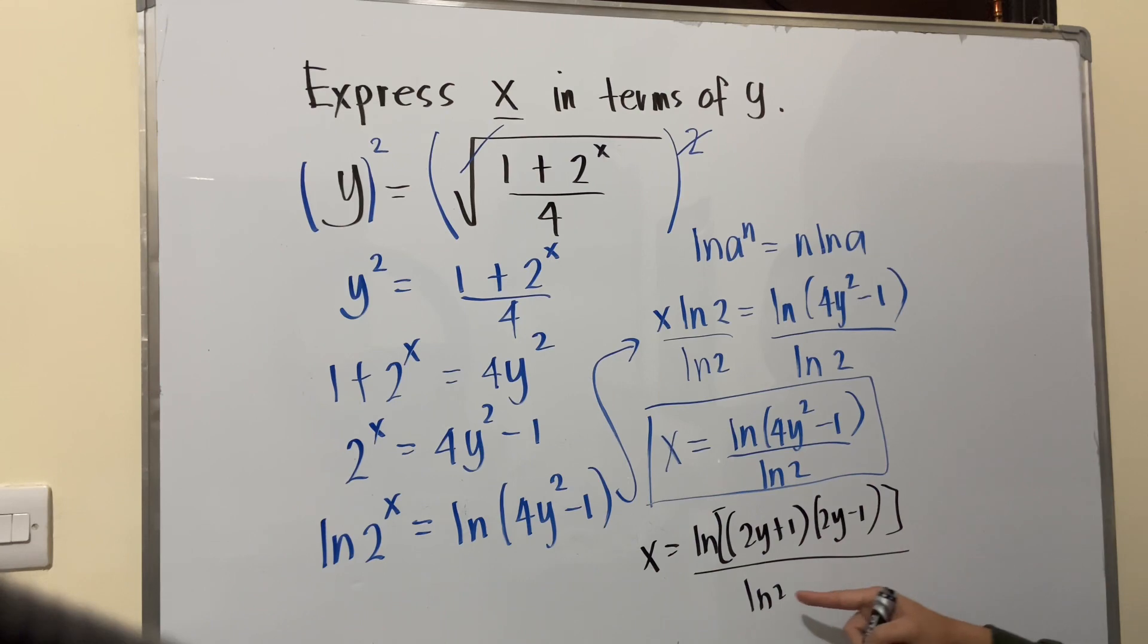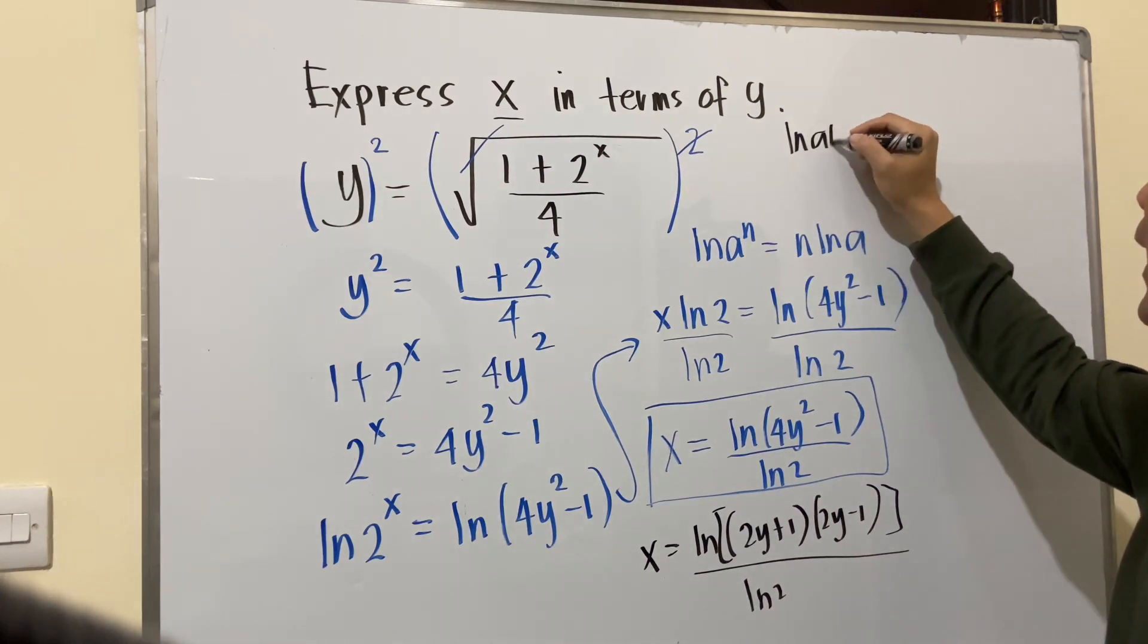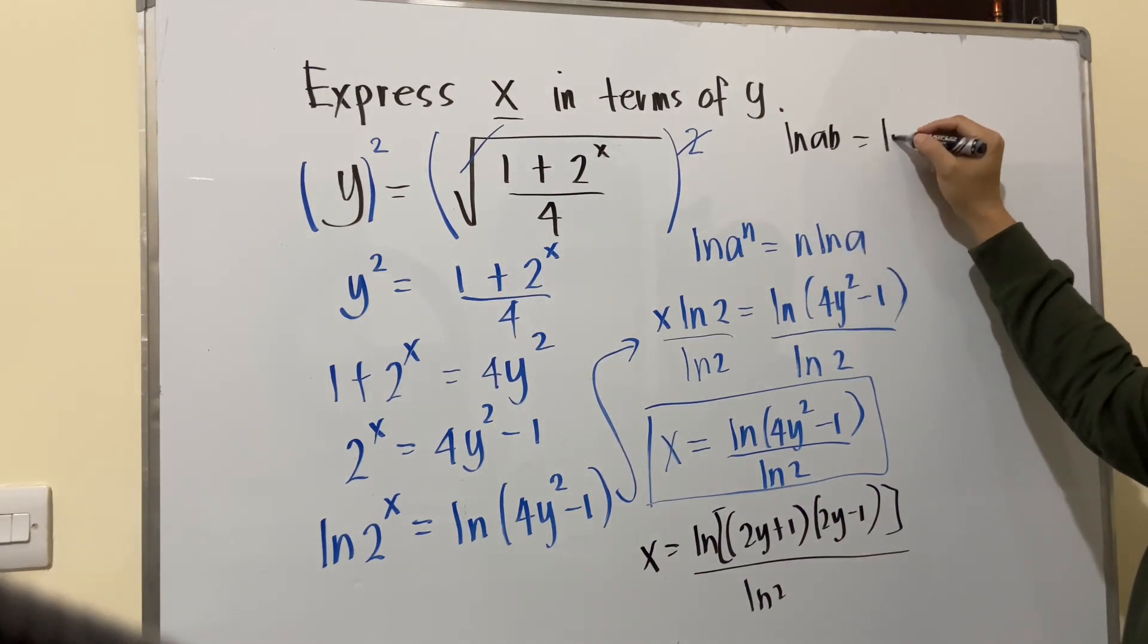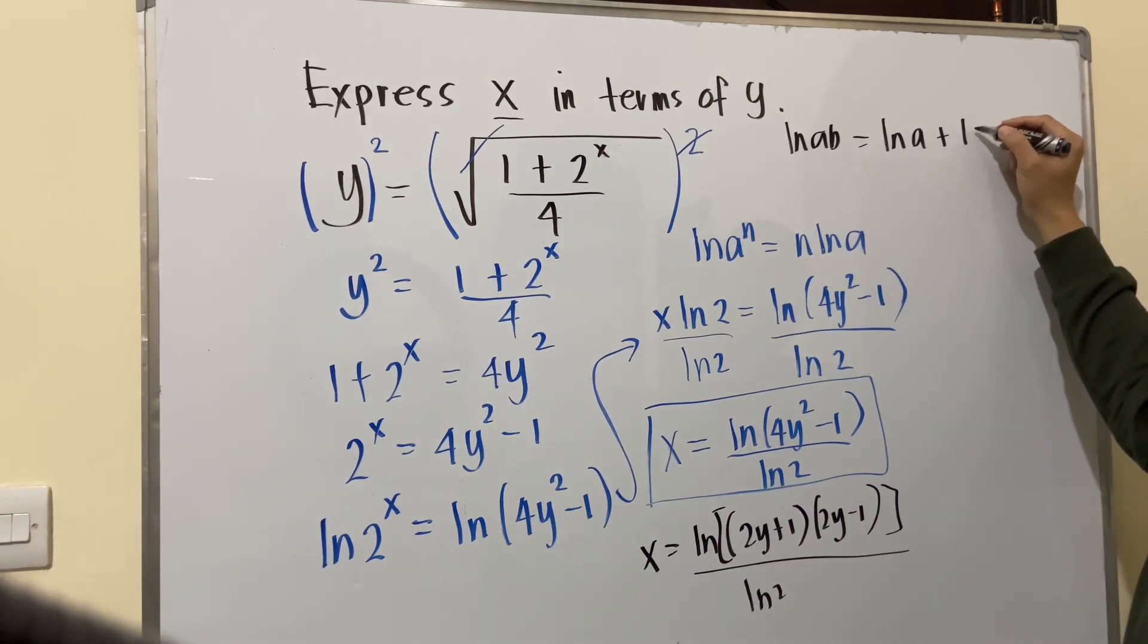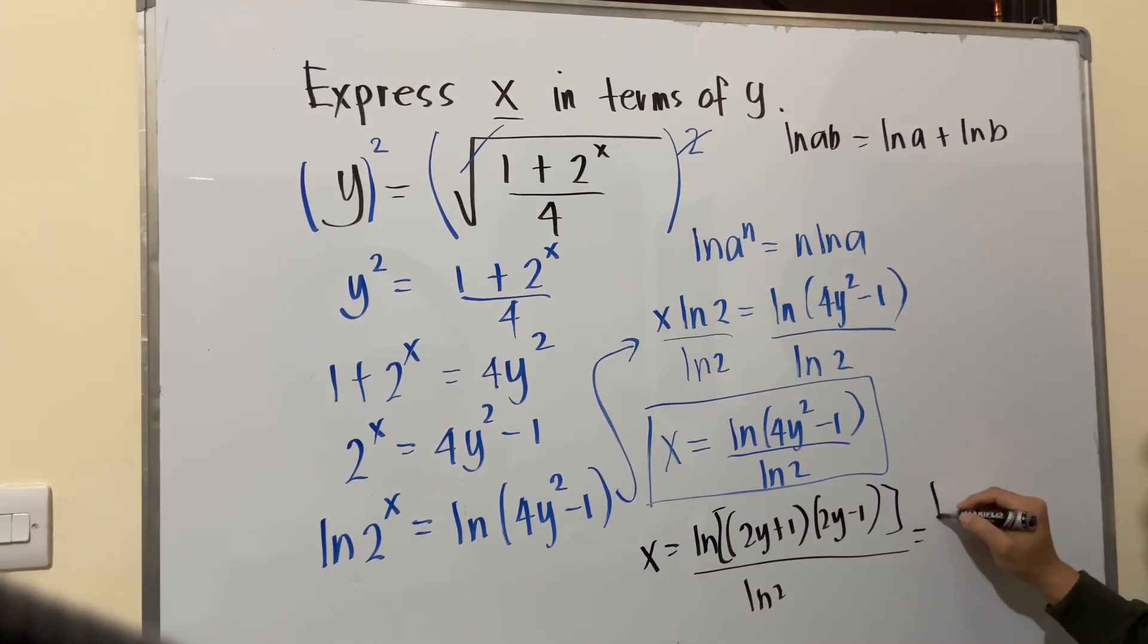In other cases also, this can be written as—properties of logarithms, if you have ln A times B, this will equal ln A plus ln B since this is multiplication. So you can do also here like ln 2y plus 1, 2y minus 1 over ln 2.